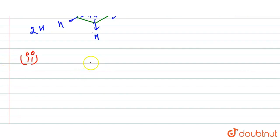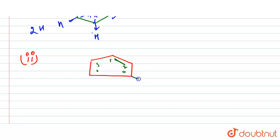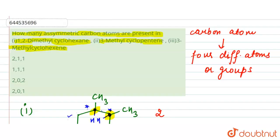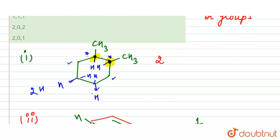Next is 3-methylcyclopentene. Drawing the cyclopentene structure, carbon 1 and 2 are part of the double bond — these are not chiral due to the double bond. Carbon 3 has one hydrogen, one CH3, and two different chain portions, making it chiral. So 3-methylcyclopentene has one chiral center.